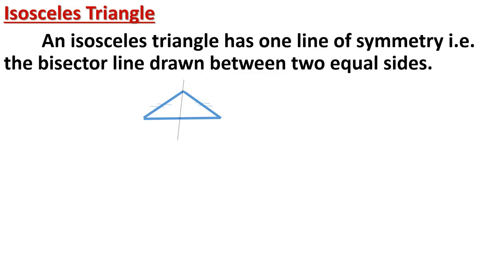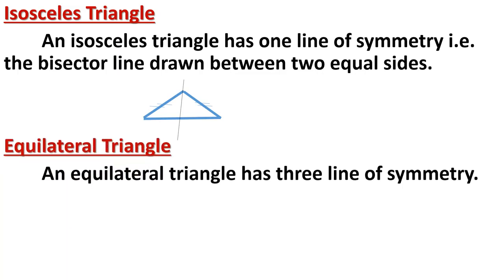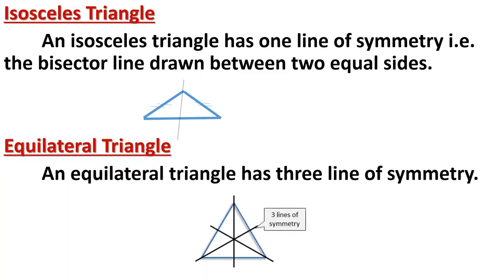Next is the equilateral triangle, whose all three sides are equal. An equilateral triangle has three lines of symmetry. Each line is drawn from one vertex to the midpoint of the opposite side. Remember: a line of symmetry always passes through the midpoint of the side, otherwise it is not a line of symmetry.